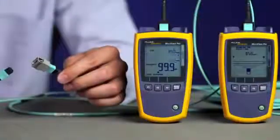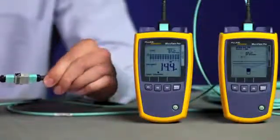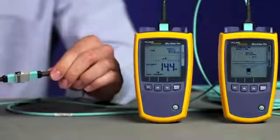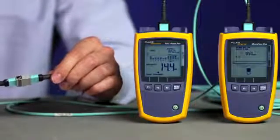Now simply connect your test cords to the MPO trunk cable, and in less than 6 seconds you'll have the loss and polarity measurements for all 12 fibers.